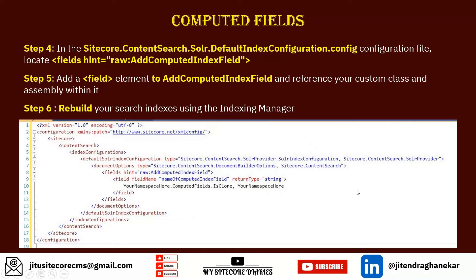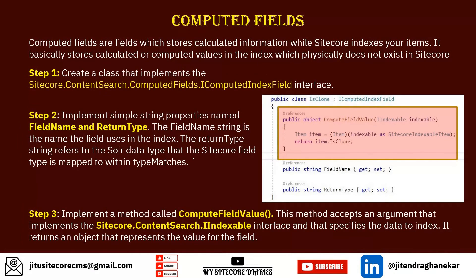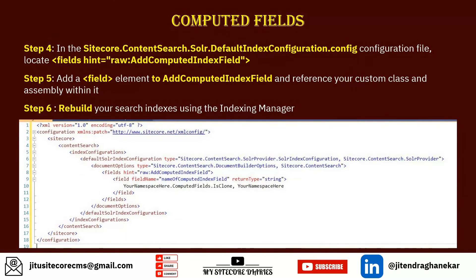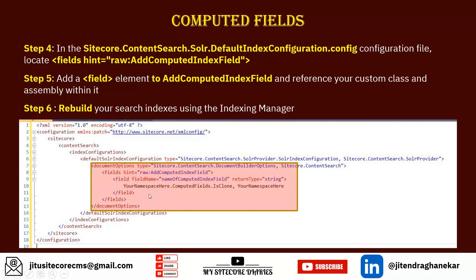To summarize computed fields: they are calculated or logical fields not physically stored in Sitecore. First, create a class implementing `IComputedIndexField` with a `FieldName` property and a `ReturnType` for the data type. Then implement the `ComputeFieldValue` method with your logic. Finally, write a patch config adding the computed field with its name, data type, and the fully qualified class name.